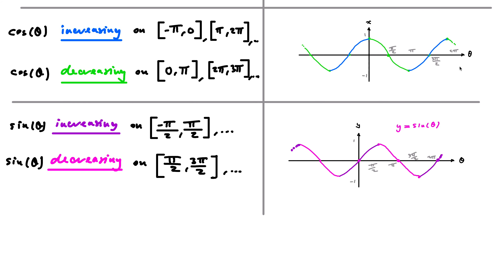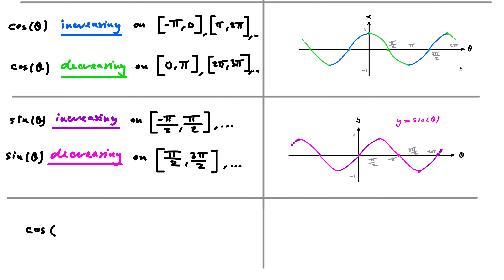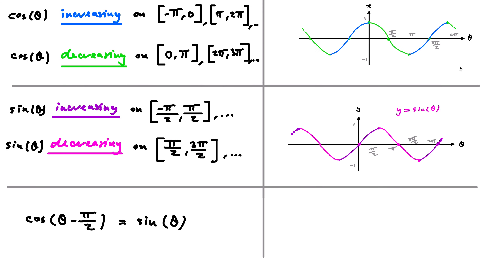These graphs also show something quite interesting: sine and cosine are incredibly similar graphs. It turns out you can easily get sine from cosine with very simple transformations. Specifically, cosine of theta minus pi over 2 is equal to sine of theta. So thinking about the graph, this means cosine translated to the right by pi over 2 gives you the sine graph — one of the elementary transformations.